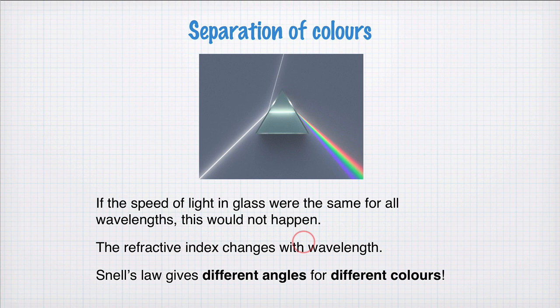I showed you that simulation of white light being separated. This is a photo of how that works. There's a beam of white light coming in here. Some is reflected, some is transmitted and then split up into its different colors. If the speed of light in glass were the same for all wavelengths, this would not happen. When you calculate the angle of refraction using Snell's Law, you'd get the same angle for every wavelength. So what this picture tells you is that the refractive index must change with wavelength. Snell's Law gives different angles for different colors, and this effect is known as dispersion.